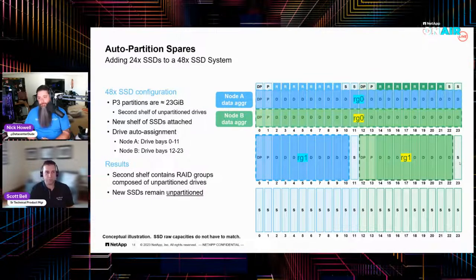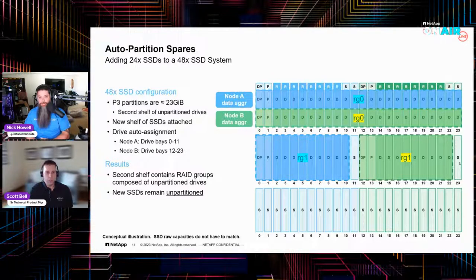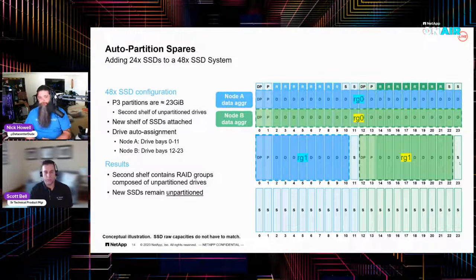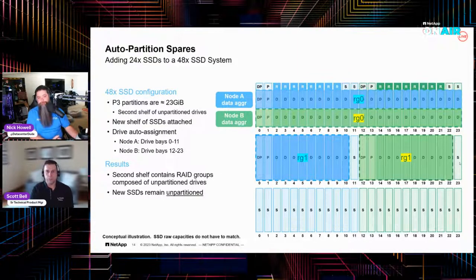So there's always got to be — if you have whole drives, there have to be spare whole drives as well. You can't automatically partition them. Now it clicked. Yeah — you always want to maintain the rule: you always want to maintain one spare drive per type and ideally per capacity.